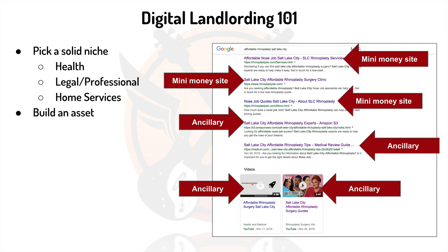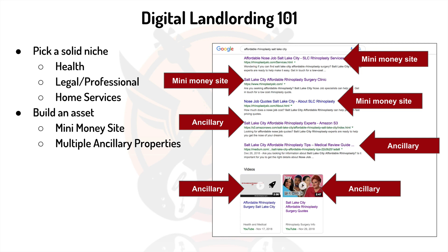Once you've done that, you build an asset — a mini money site. You can see examples right there. We love using Sparks to do this. That asset also includes having multiple ancillary properties — your ammo love, videos on YouTube, articles on Medium. Our whole Google love, or love bomb strategy, covers that. That's how you monopolize.